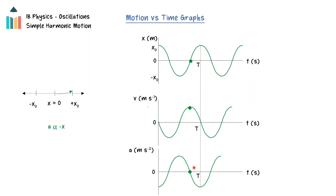And finally, to complete a full period of oscillation, the motion time graphs will repeat these patterns of maximum and zero values for the displacement, velocity, and acceleration.